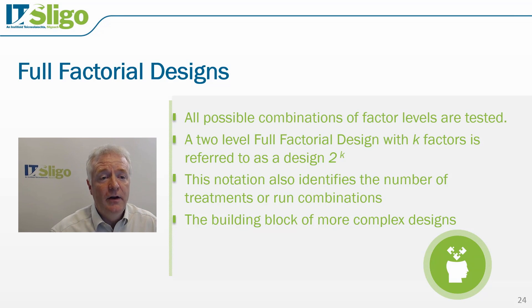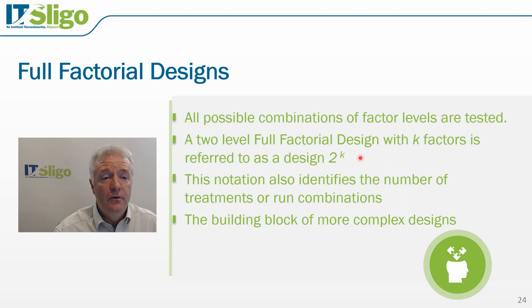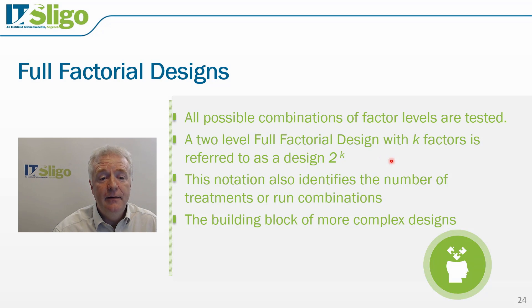We will spend some time looking at the full factorial designs. In a full factorial design, all possible treatment combinations of levels are tested. There is a specific notation associated with a two-level factorial design: 2 to the power of k, where k refers to the number of factors. This notation is very useful because it also identifies the number of experiments we will need to perform. The usefulness of full factorials is that they form the building blocks for much more complex designs, such as fractional factorial designs and even the screening experiments.